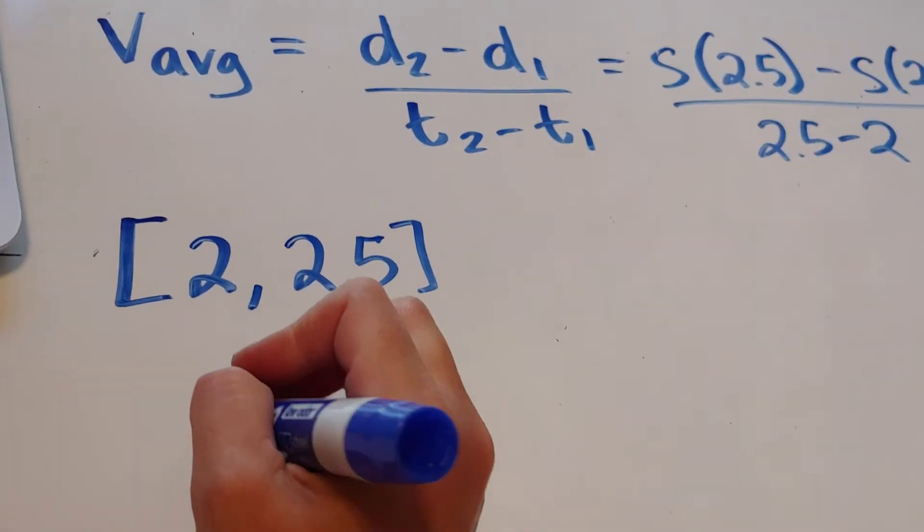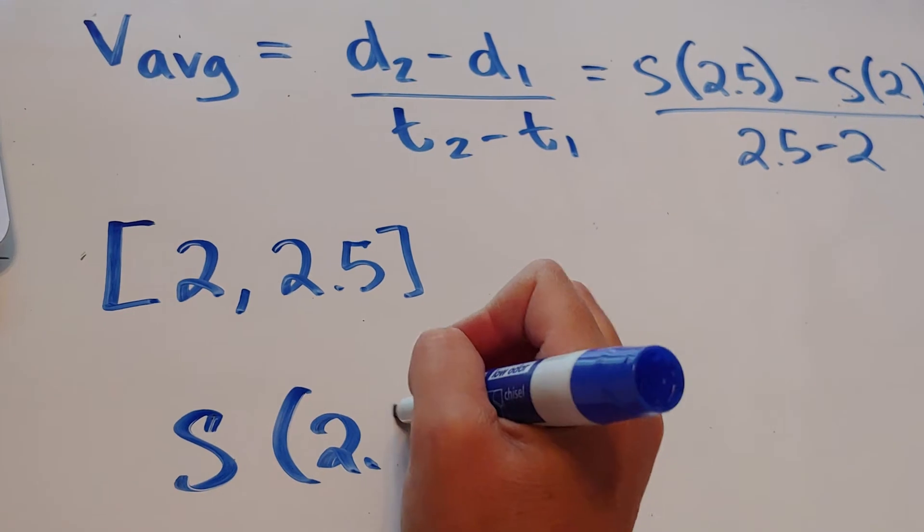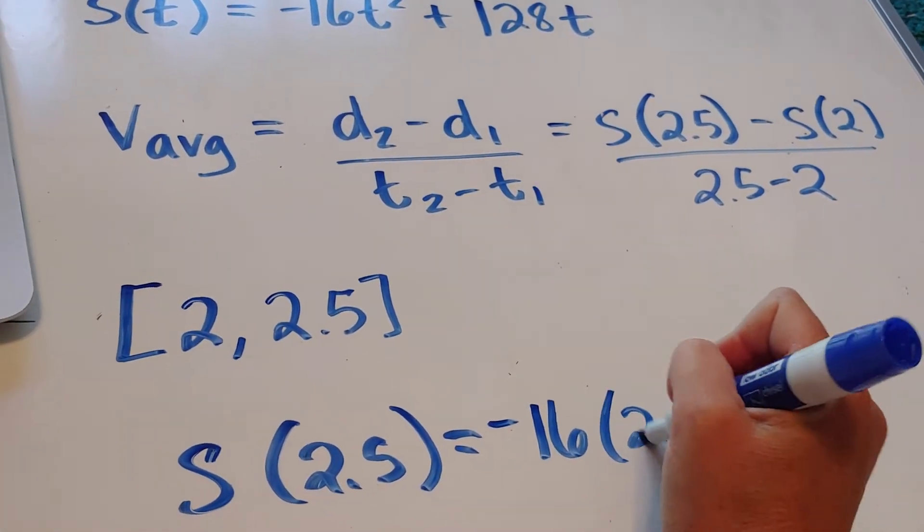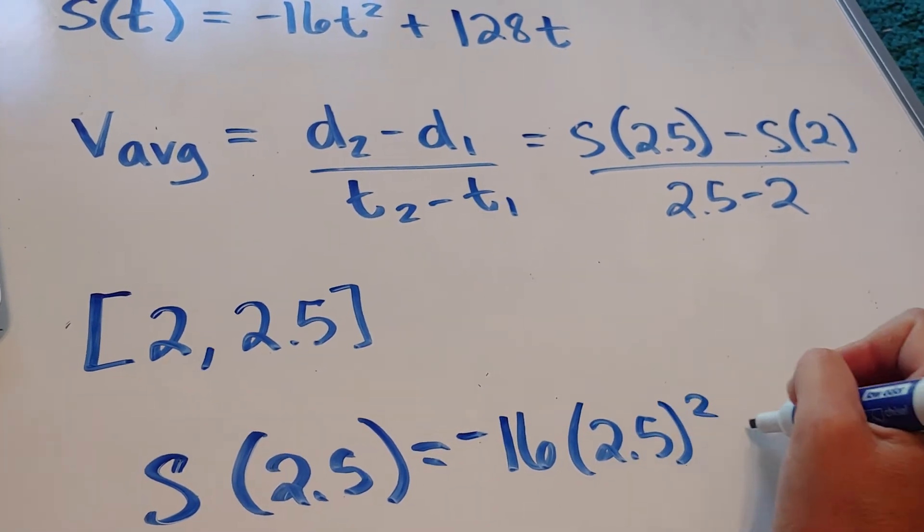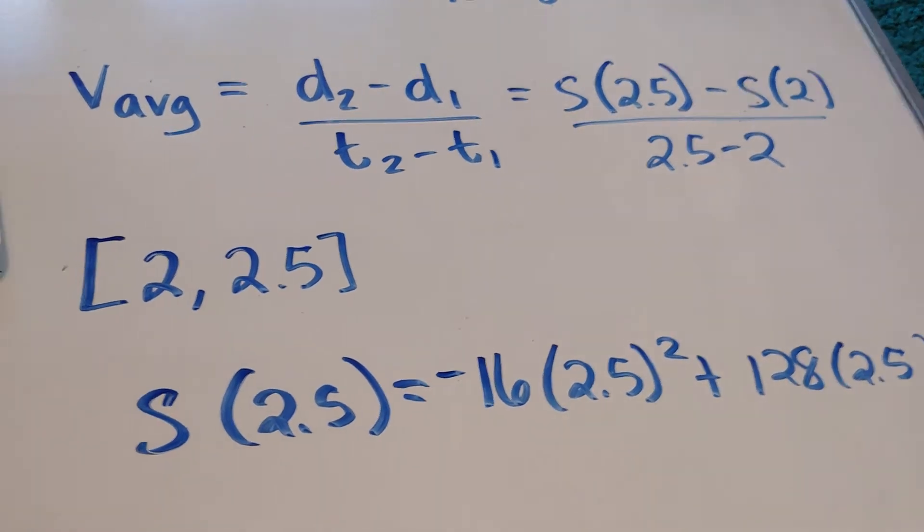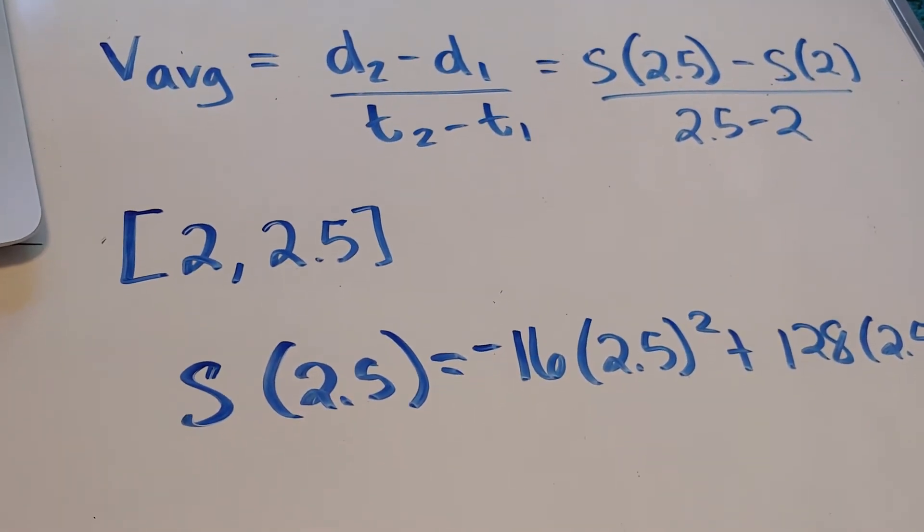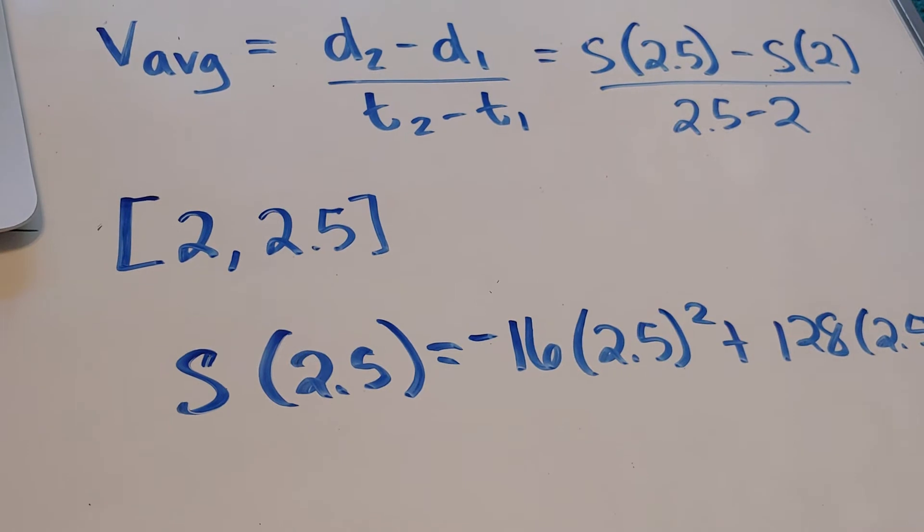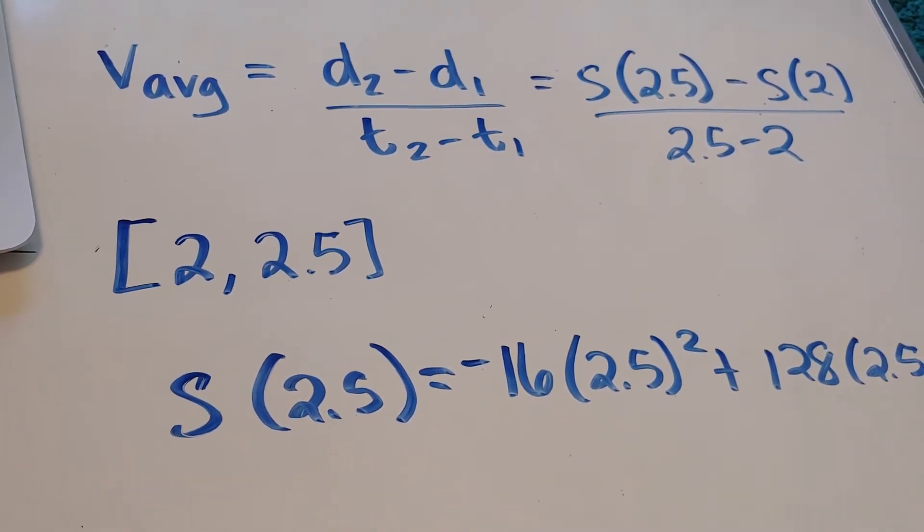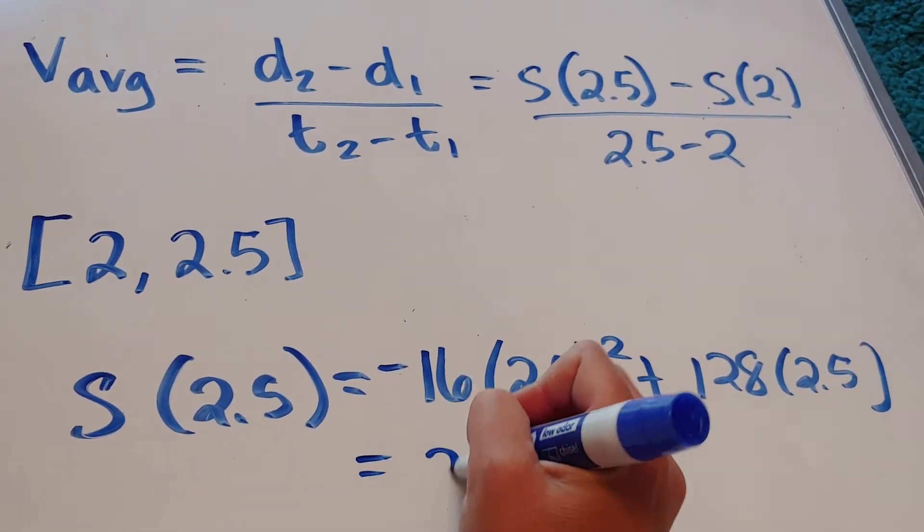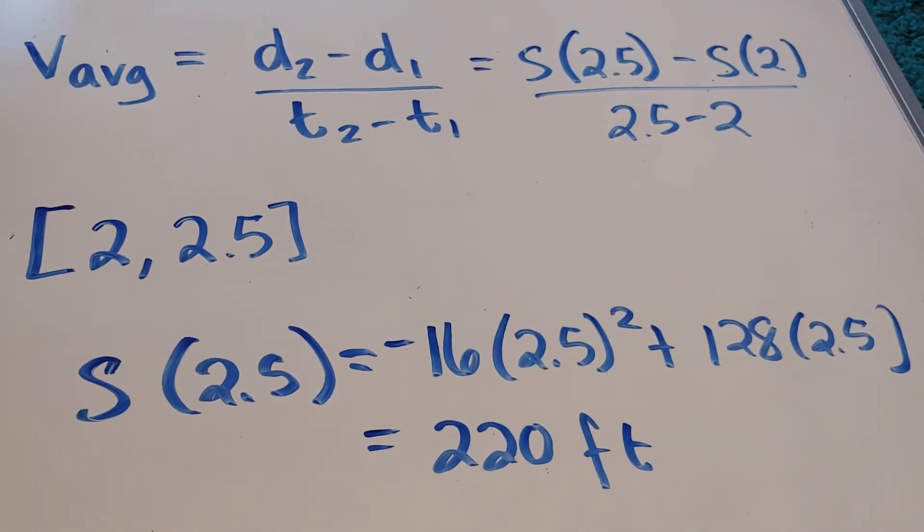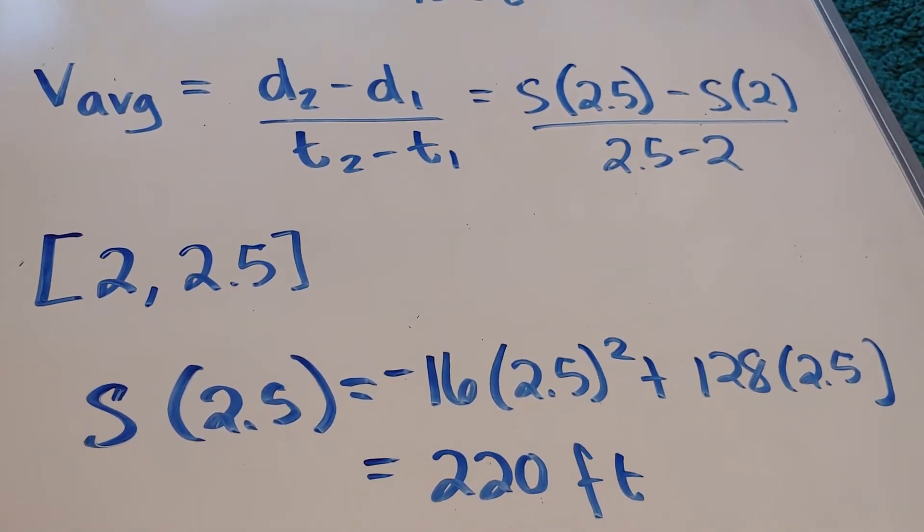Just to remind you of what s of 2.5 is, this is just some basic arithmetic skills here. I want negative 16 times 2.5 squared plus 128 times 2.5. I'm going to put that in my calculator. And I get 220. So this would be 220 feet. So at the time of 2.5, I have a height of 220 feet.